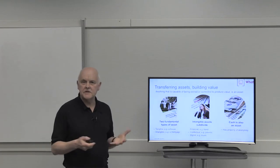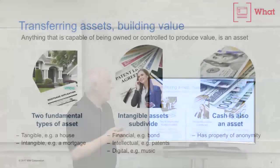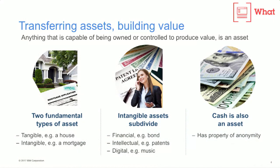Assets are transferred across the business network, and we also observe that assets are of two different types, fundamentally. There are tangible assets, like your house or your car, and there are intangible assets, like a piece of digital music or a financial instrument, such as a bond, or a piece of intellectual property.